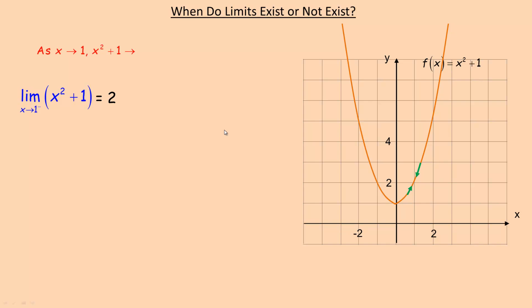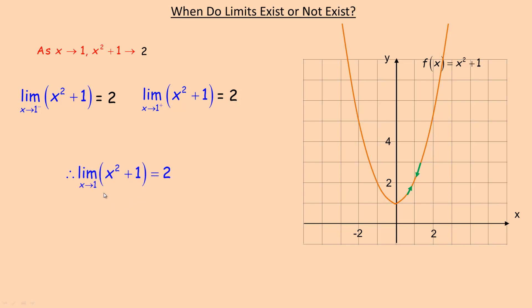As x approaches 1, we're getting close to a y-value of 2. The right-hand limit — as x approaches 1 from above or the right side — also equals 2, since we're also getting close to a y-value of 2 from that direction. As long as those two numbers are the same, we say the limit as x approaches 1 of x² + 1 is equal to 2. That's what it looks like when the limit does exist.